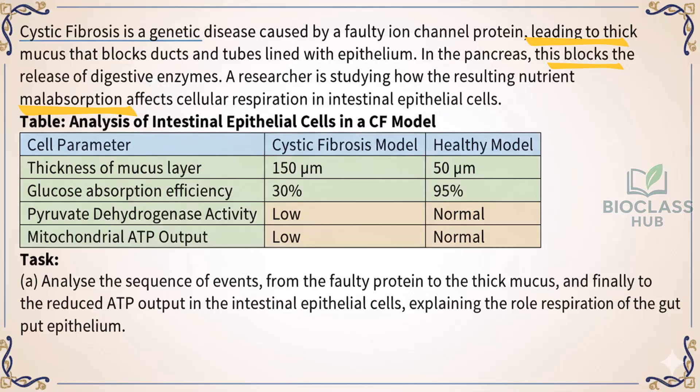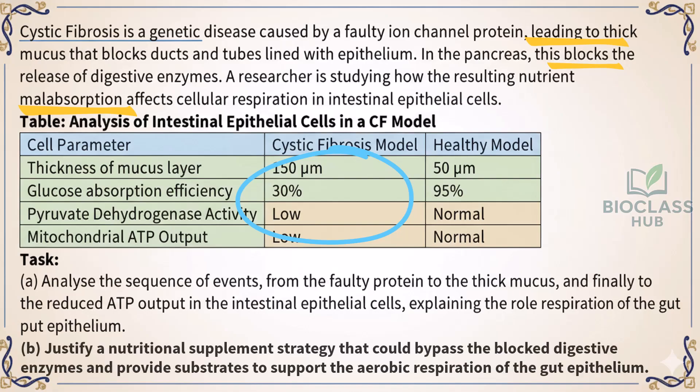Analysis of intestinal epithelial cells in a CF model — analyze the different parameters. Part A: Analyze the sequence of events, from the faulty protein to the thick mucus, and finally to the reduced ATP output in the intestinal epithelial cells, explaining the role of glucose and pyruvate dehydrogenase. Part B: Justify a nutritional supplement strategy that could bypass the blocked digestive enzymes and provide substrates to support the aerobic respiration of the gut epithelium.